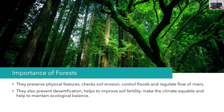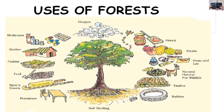Forests also prevent desertification, help to improve soil fertility, make the climate equable, and help to maintain ecological balance. Forests help in balancing or moderating the climate — reducing heat, increasing atmospheric moisture, and increasing rainfall. They also maintain a balance in the ecosystem between human beings, plants, and animals, preventing unwanted climatic change. They provide shelter to wildlife, and give us oxygen, medicines, shelter, fodder, fuel, sports goods, and furniture. The roots of trees bind the soil together and prevent soil erosion. Forests also provide honey, fruits, gum, lac, timber, and rubber.